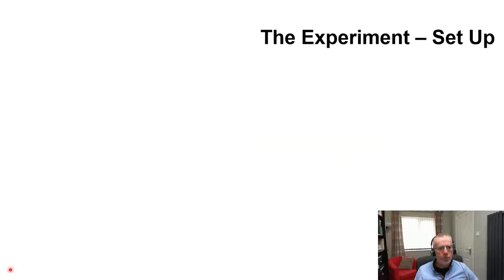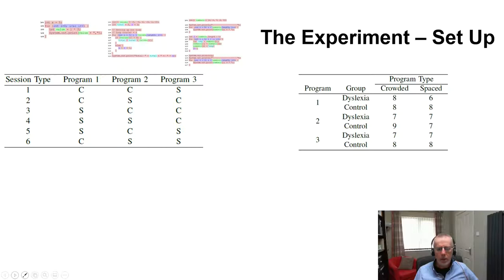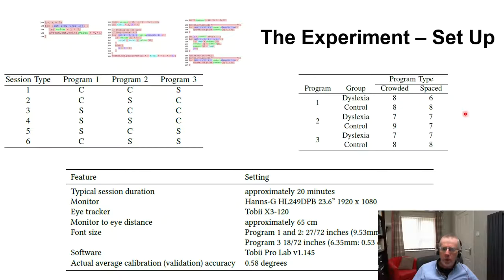Some comments on how the experiment was designed. Participants were exposed to three small Java programs doing simple arithmetic and data manipulation, in combinations of either a spaced or a crowded layout. We managed to recruit 30 participants: 14 in the dyslexia group and 16 in the control group. This resulted in the breakdown shown across control group and program type. We were using a Tobii X3, and there are some details in the paper about our font sizes.